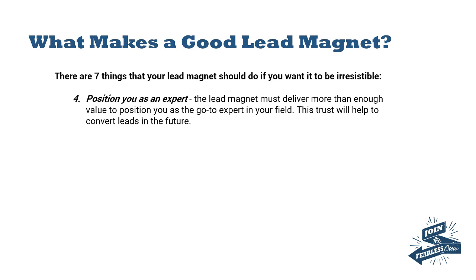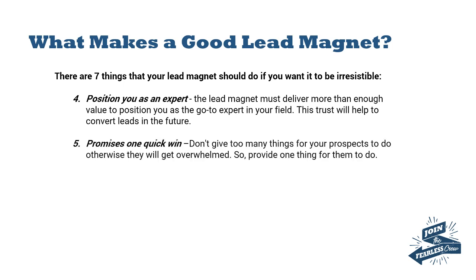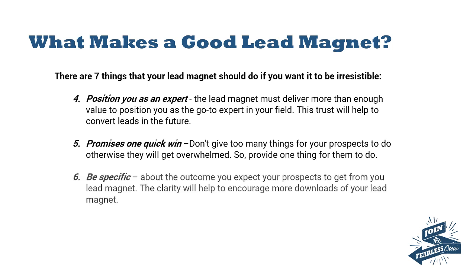This level of trust will help you to convert those leads in the future. Number five: promise one quick win. If you give too much stuff away, prospects are going to get overwhelmed. Just give them one thing to do and be as specific as possible about the outcome you expect them to get. The clarity will help encourage them to download more of your lead magnets.